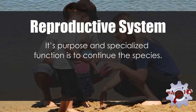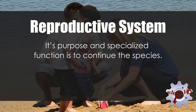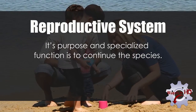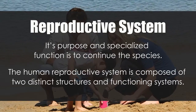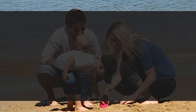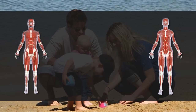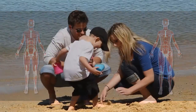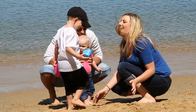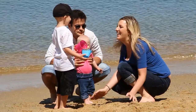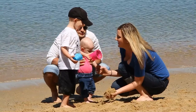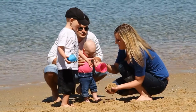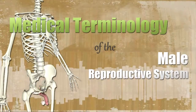The reproductive system — its purpose and specialized function is to continue the species. The human reproductive system is composed of two distinct structures and functioning systems: the male and female systems. In this particular video, we'll be covering the medical terminology of the male reproductive system.